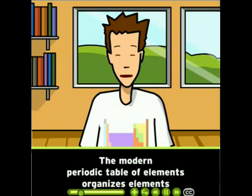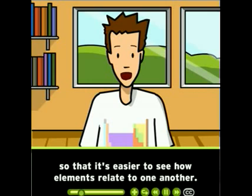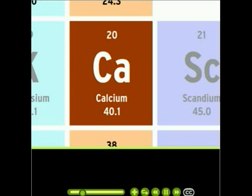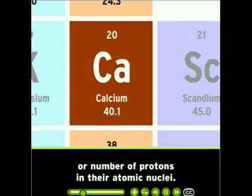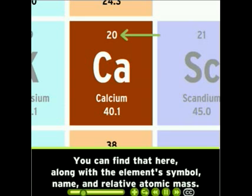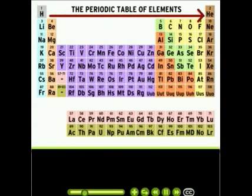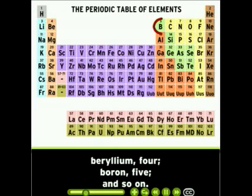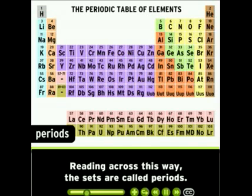The modern periodic table of elements organizes elements so that it's easier to see how elements relate to one another. The elements are listed by their atomic number, or number of protons in their atomic nuclei. You can find that here along with the element's symbol, name, and relative atomic mass. You can read across the table this way — hydrogen has one proton, helium has two, lithium three, beryllium four, boron five, and so on. Reading across this way, the sets are called periods.